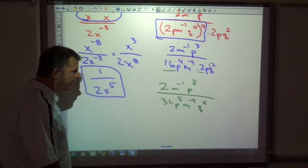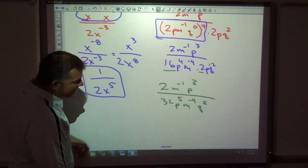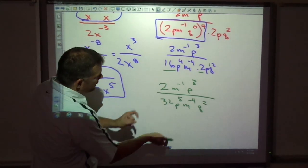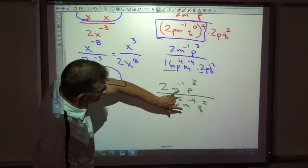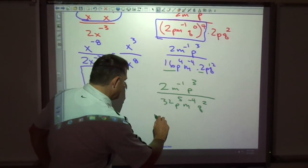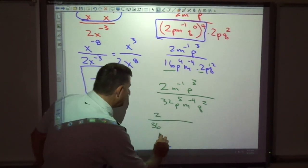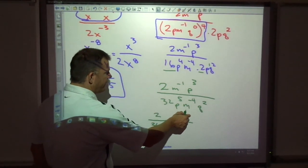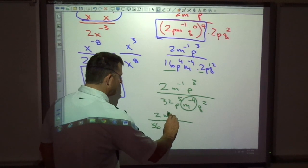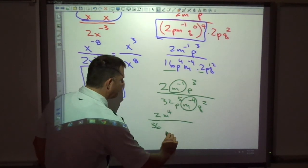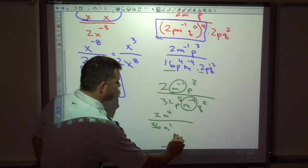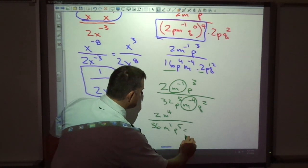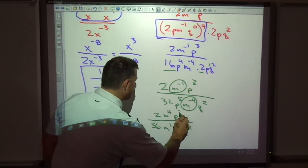Phew, I'm getting tired. All right, I'm not finished yet. Now I've got to change, change. So here's some negatives, here's some negatives. Let's change those. 2 over 32, I'll keep that for the time being. I'm going to move this one up. Move this one down. And I've got p to the 5th, q squared, p to the 3rd.